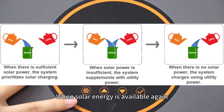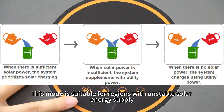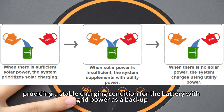When solar energy is available again, grid power ceases to charge the battery. This mode is suitable for regions with unstable solar energy supply, providing a stable charging condition for the battery with grid power as a backup.